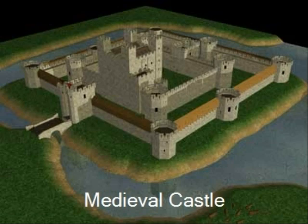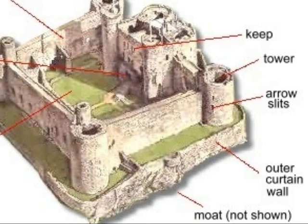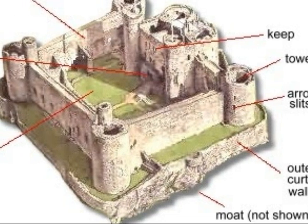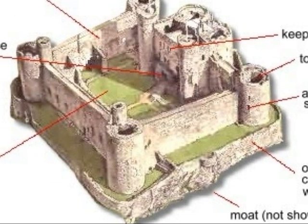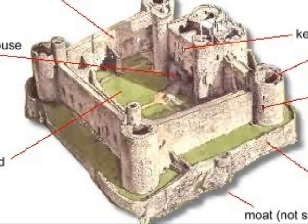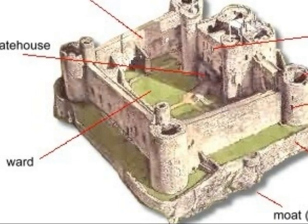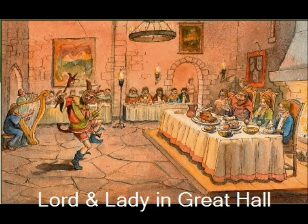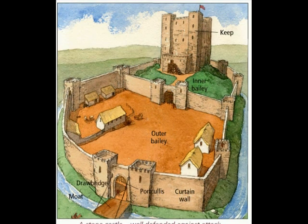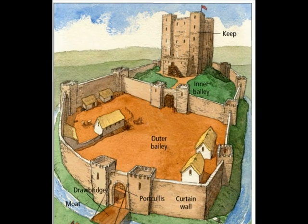A drawbridge was lowered to cross the moat that often surrounded the castle and grounds. The lord and lady lived in a three- or four-storey stone building called the Keep. Castles could be cold and draughty places, as they were made of stone, and windows were without glass. Large fires were built in the banquet hall and the living and sleeping quarters, and tapestries were hung on the walls to keep in some heat.